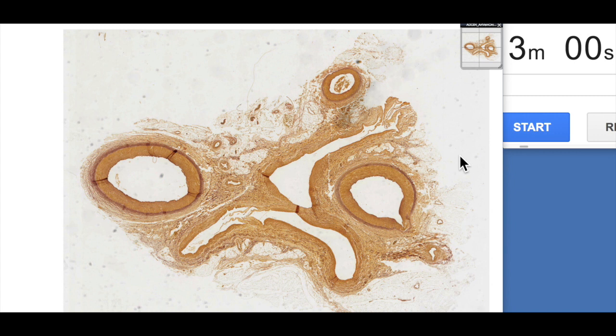G'day everyone, Jamie Chapman for another episode of 3-Minute Histology. Today we're going to continue our look at blood vessels. In particular, today we're going to be looking at muscular arteries and veins.